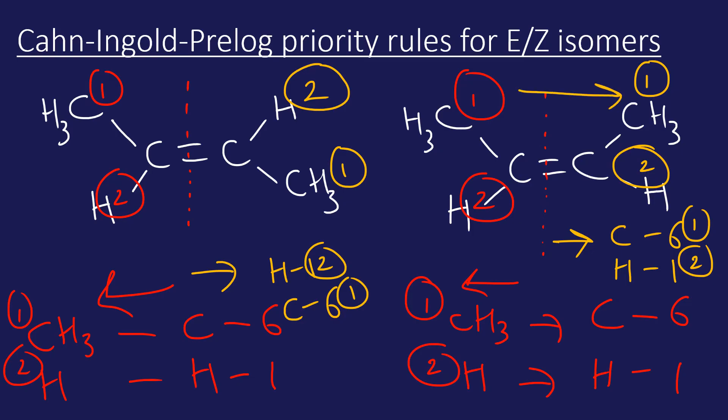Now what we do is look at whether the high priority groups are on the same side. If the number one priority is on the same side, this is called the Z isomer. My understanding is the Z comes from zusammen in German, which means together. If the number one priority groups are not together—they're opposite, as they are in this example—that is the E isomer. I believe that is entgegen, which means opposite in German, but someone can correct me if I'm wrong. So that's our E and Z isomers.